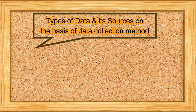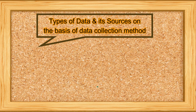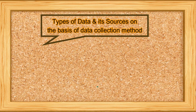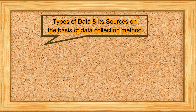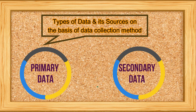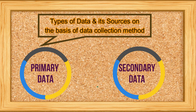Besides the nature of data, data can also be classified on the basis of the method for data collection. Keeping in view the method for data collection, data is again of two types: one, primary data; and two, secondary data.